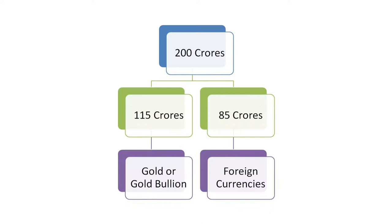Printing of currency notes in India is done on the basis of the Minimum Reserve System. This system has been applicable in India since 1956. According to this system, the Reserve Bank of India has to maintain assets of at least 200 crore rupees at all times. Out of this 200 crore, 115 crore rupees should be in the form of gold bullion, and the rest 85 crore should be in the form of foreign currencies.